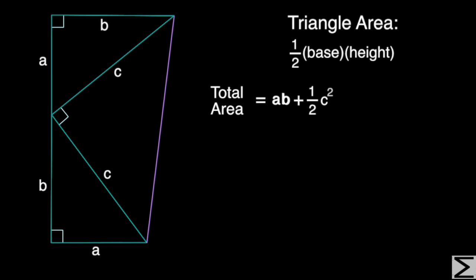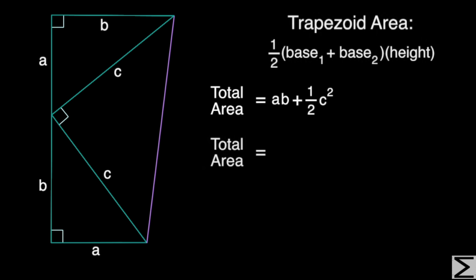We can also find the area of the trapezoid using the trapezoid area formula, where base one is A, base two is B, and the height of the trapezoid is A plus B. We can FOIL this out and simplify.